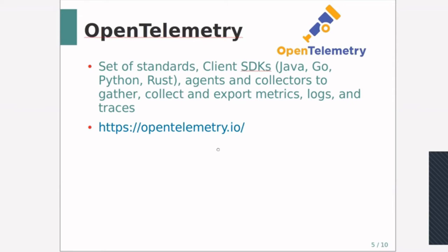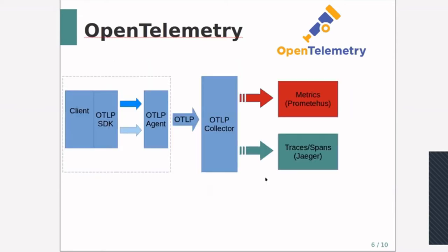The top-level architecture looks like this: you have your client application with an OTLP SDK built in, using APIs to gather metrics and do tracing. That data is sent to OTLP agents, which are very flexible - the agent could be deployed on the same pod, as a side process, or as a sidecar. You then configure the agent to ship metrics to either an OTLP collector or directly to Prometheus or Jaeger. Having a collector allows you to aggregate metrics from different agents into a bigger pipe, giving you quite a lot of flexibility.